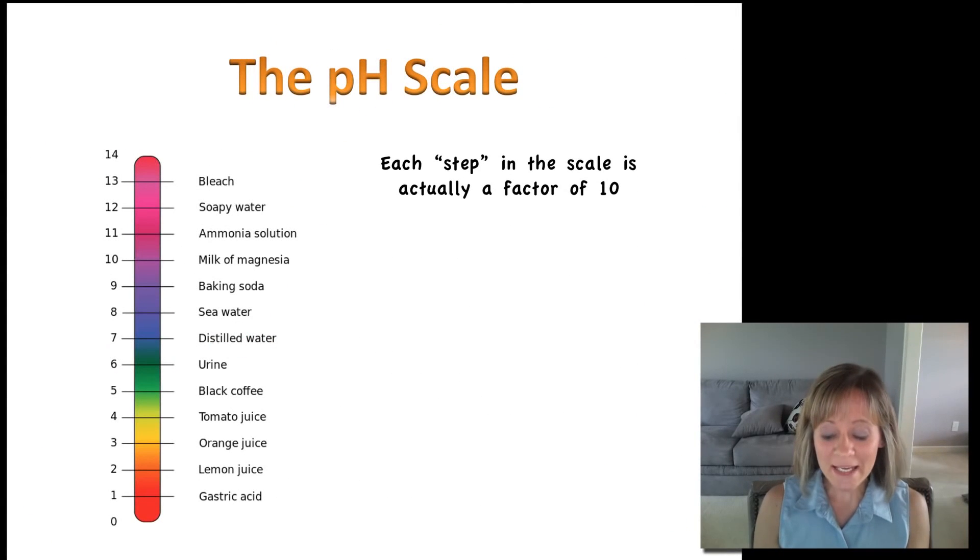Let's take a closer look at the pH scale. Each step—and this is something really interesting—each step on the pH scale is actually a factor of 10, not a factor of one or two but a factor of 10. So from 7 to 8 it's going up 10, from 8 to 9 it's going up 10. Collectively, going from 7 to 9 is 100 because you're multiplying as you go up—it's a factor.